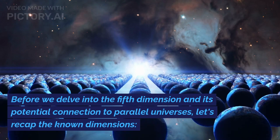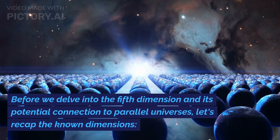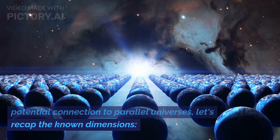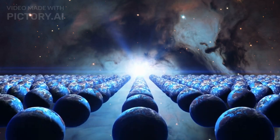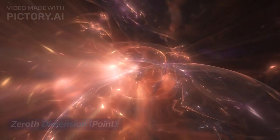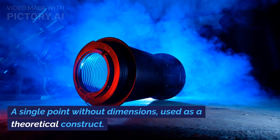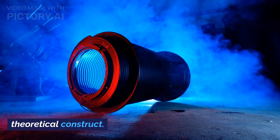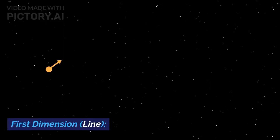The dimensions unveiled. Before we delve into the fifth dimension and its potential connection to parallel universes, let's recap the known dimensions. Zeroth dimension: point - a single point without dimensions, used as a theoretical construct. First dimension: line - a one-dimensional object with only length and no other dimension.